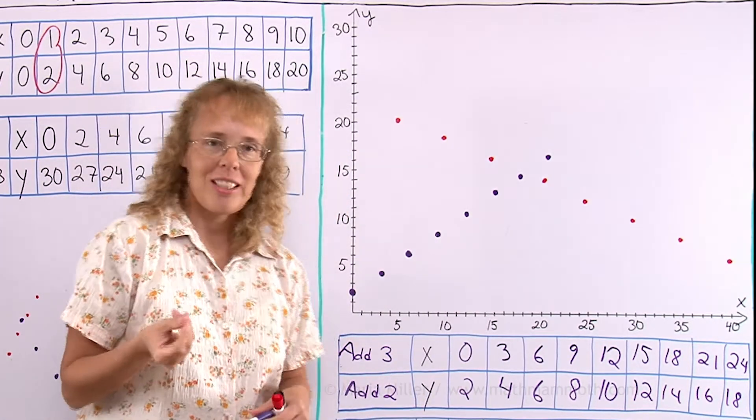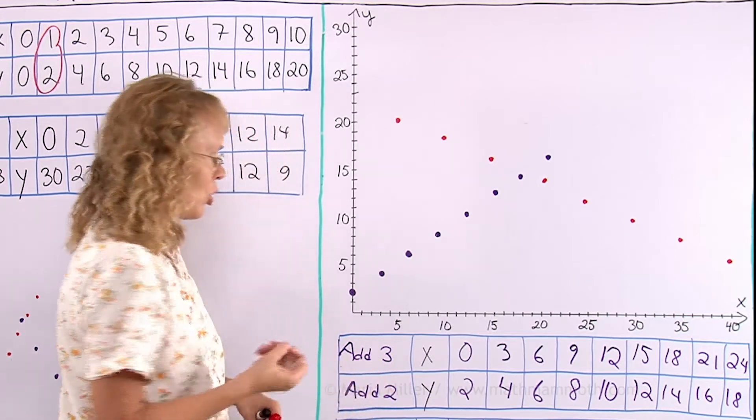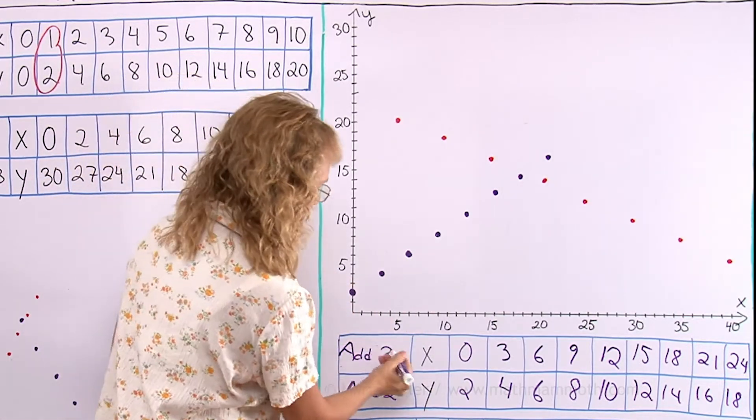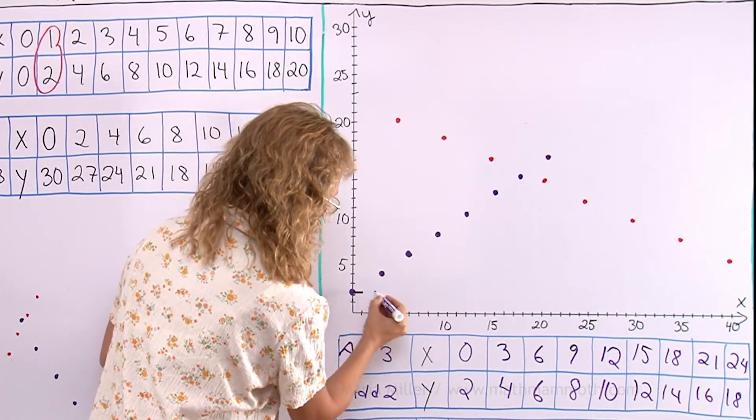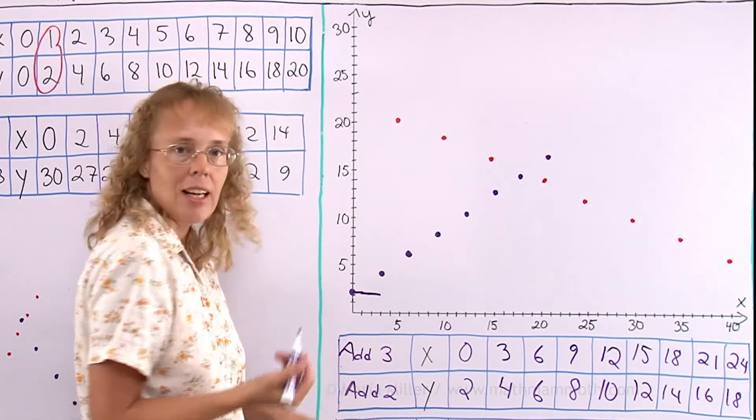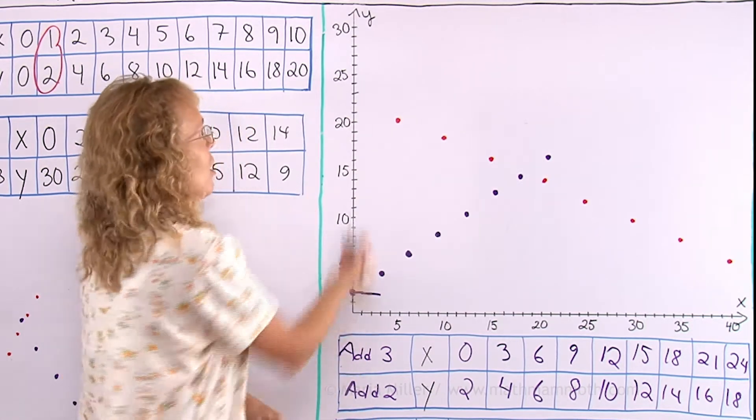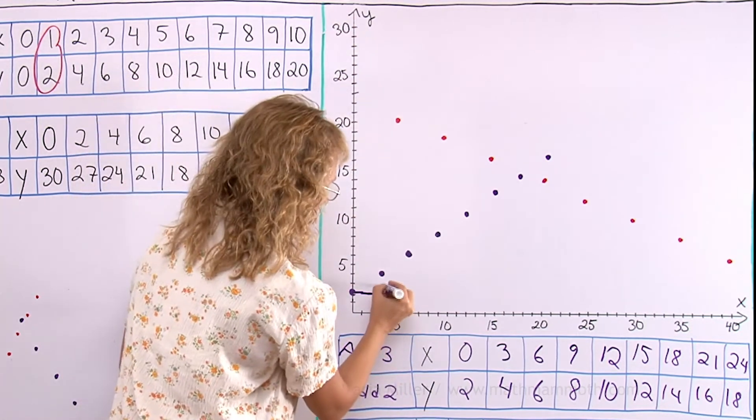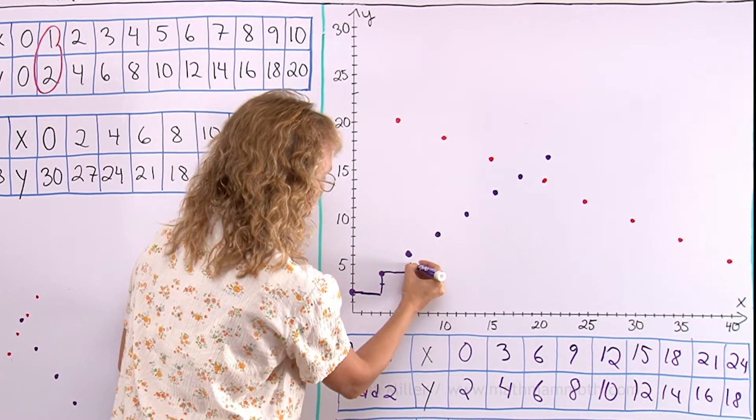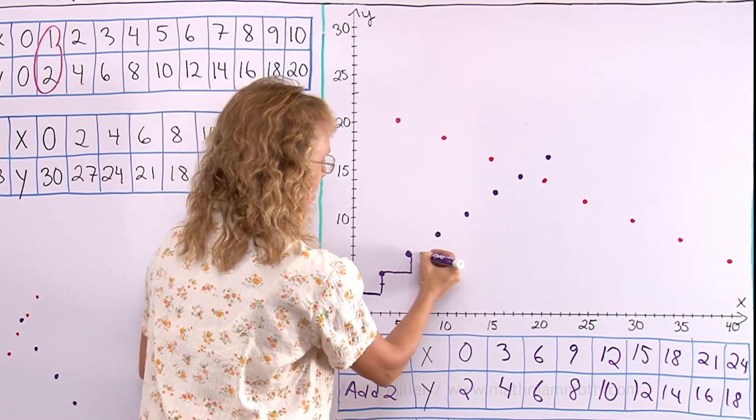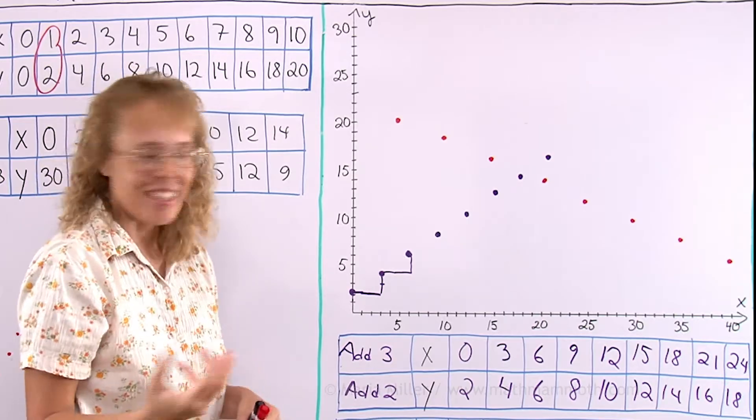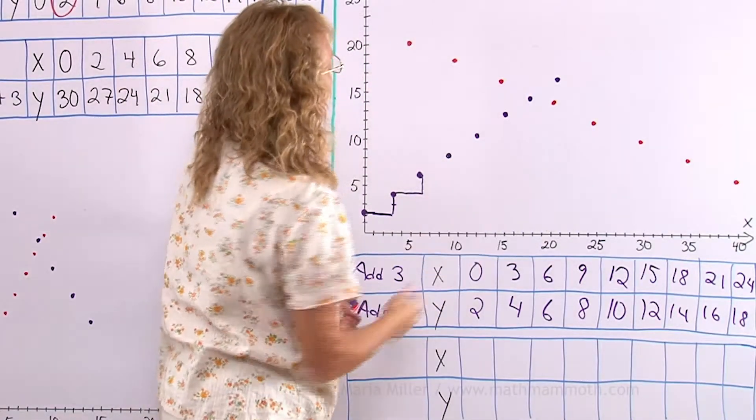And you can also see this add 3 add 2 on the graph itself. Because add 3 means that I go 3 this way: 1, 2 and 3. And then add 2 means that I go in Y direction, Y axis direction, 2 up. 2 units up. And over here go 1, 2, 3 and 1, 2 up. 1, 2, 3 this way, 1, 2 up that way. Forming like a staircase in that sense.